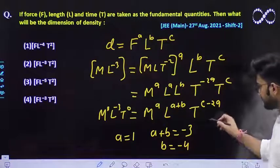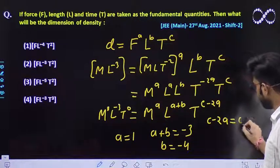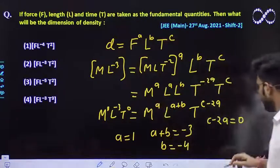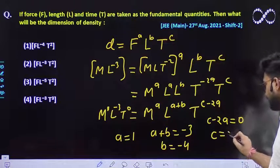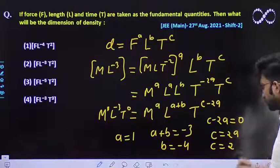Also from T relationship, C minus 2A must be equal to 0. Because left hand side must be equal to right hand side. So the C would be equal to twice of A and C must be equal to, A is 1 so C must be equal to 2.